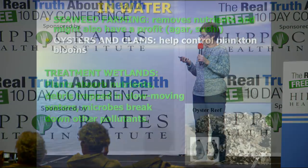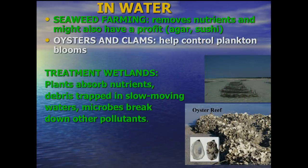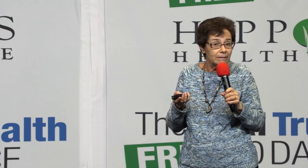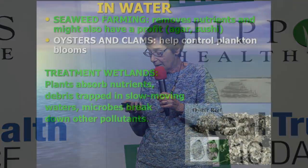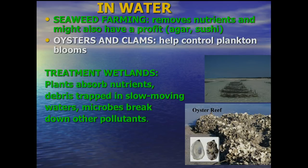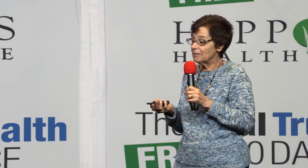Even in the water, it's possible to do things to reduce eutrophication. You can have seaweed farms — they have some in Long Island Sound off the Connecticut coast. The seaweed absorbs the nutrients and you can harvest it and use it in sushi or other things. Also, growing oysters and clams won't absorb the nutrients, but they will eat some of the plankton that are blooming and reduce the size of a plankton bloom. And there are treatment wetlands with plants to absorb the nutrients. So even once you're in the water, it's not necessarily too late — it's possible to do something to reduce eutrophication.